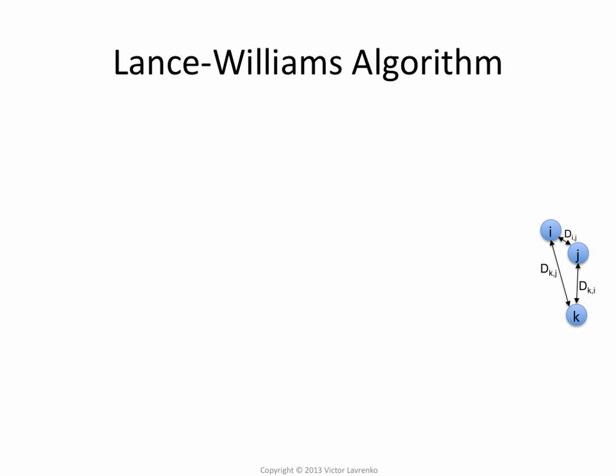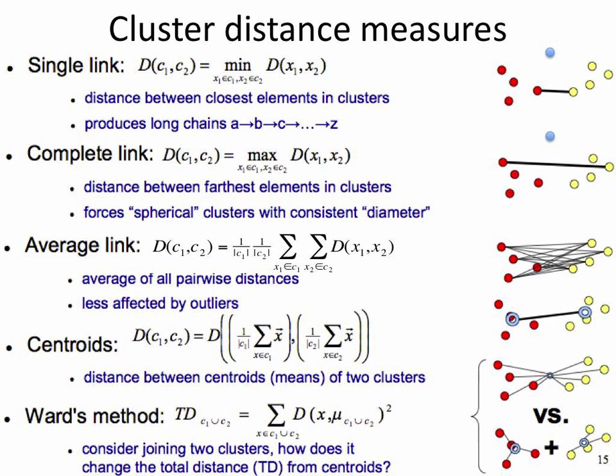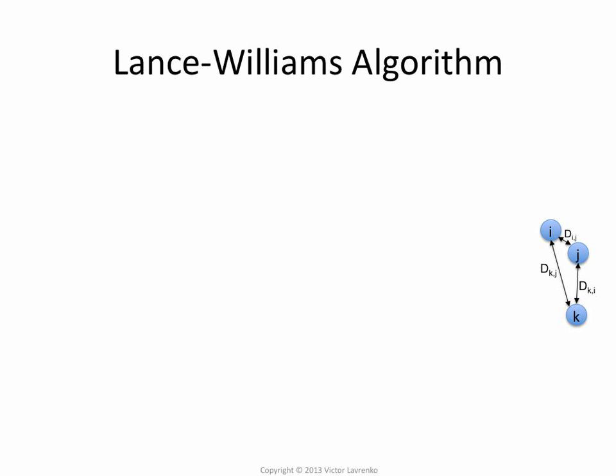Now, it turns out that there is actually a nice algorithm called the Lance-Williams algorithm, which allows you to implement all of these and a few more using one algorithm. So we're going to look at this algorithm, and we're going to start by looking at it from a single link perspective. So our distance is just the distance between individual points. That's the simplest case, and then we're going to look at a couple of other examples.